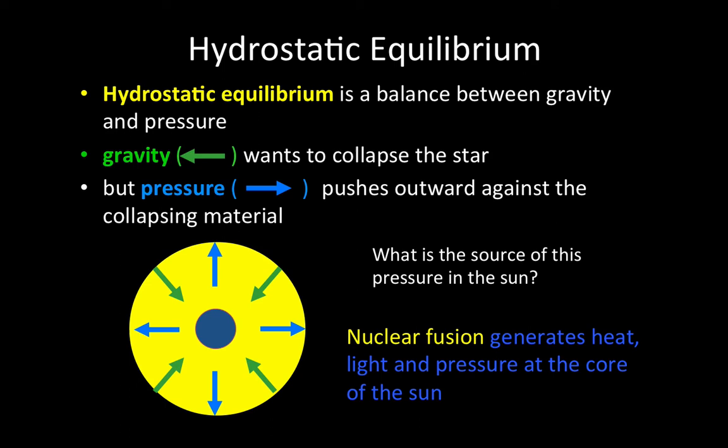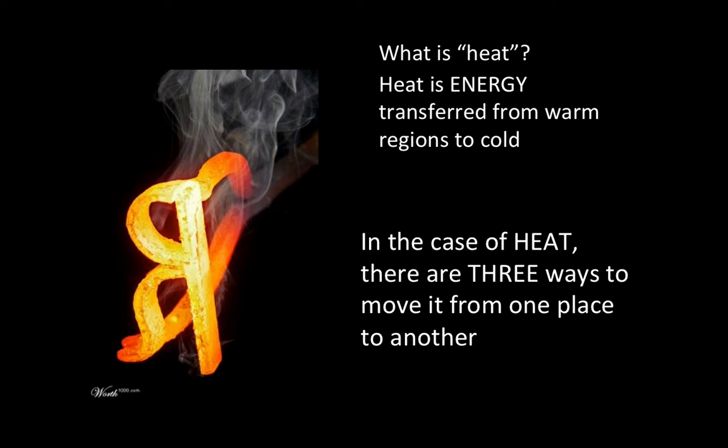Now, before we talk more about how the sun works, I need to explain a few things about how heat is transferred from one place to another. First, let me remind you that temperature is essentially motion, the motion of the atoms and molecules that make something up. Hot things have molecules that are moving fast, and cold things have molecules that are moving slow. Heat, on the other hand, is a form of energy, and it tends to move from warm regions to cold.